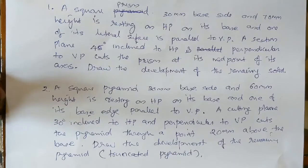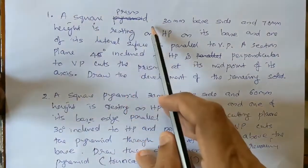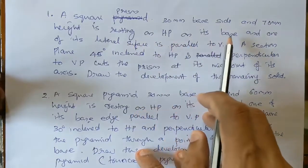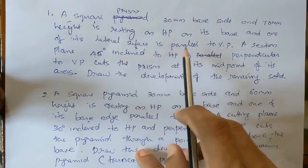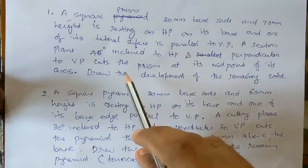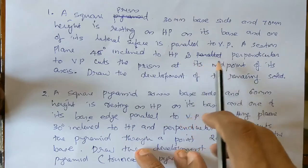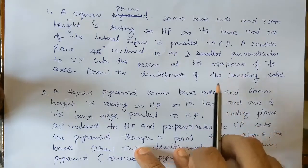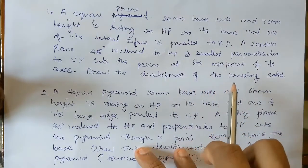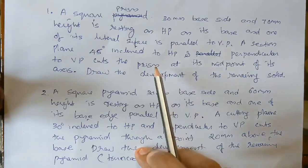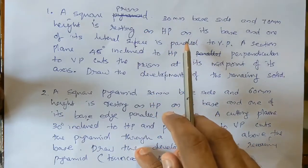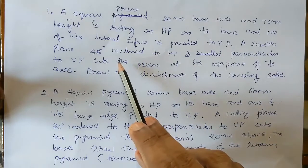Let us start the first problem. A square prism with 30mm base side and 70mm height is resting on HP on its base, with one of its lateral surfaces parallel to VP. A section plane inclined at 45 degrees to HP and perpendicular to VP cuts the prism at the midpoint of its axis. Draw the development of the remaining solid.